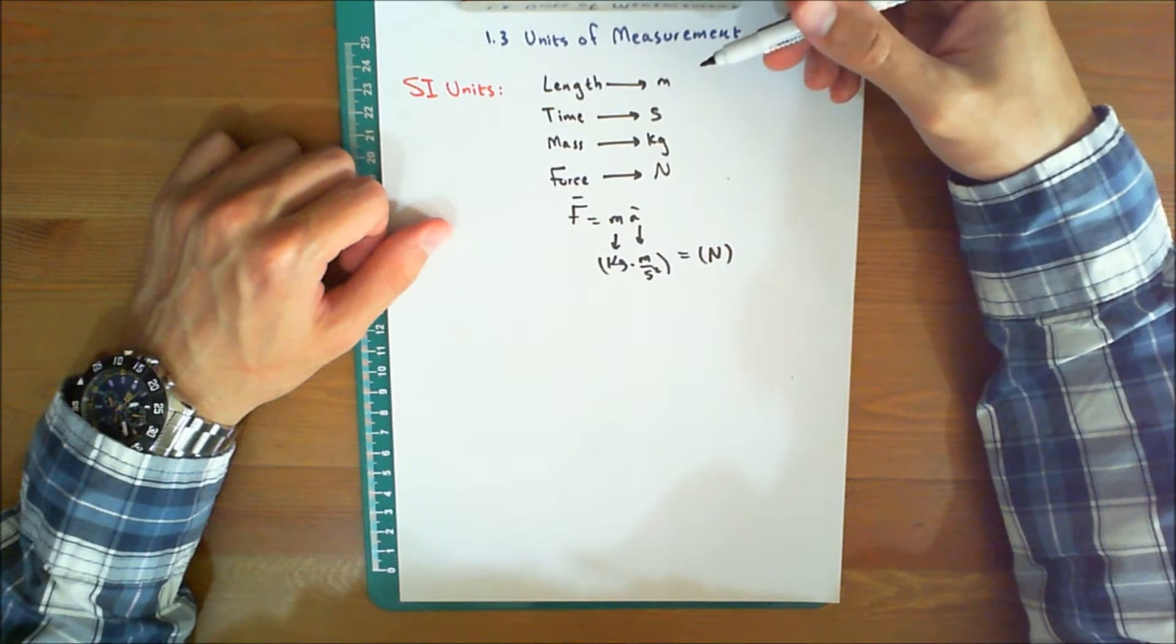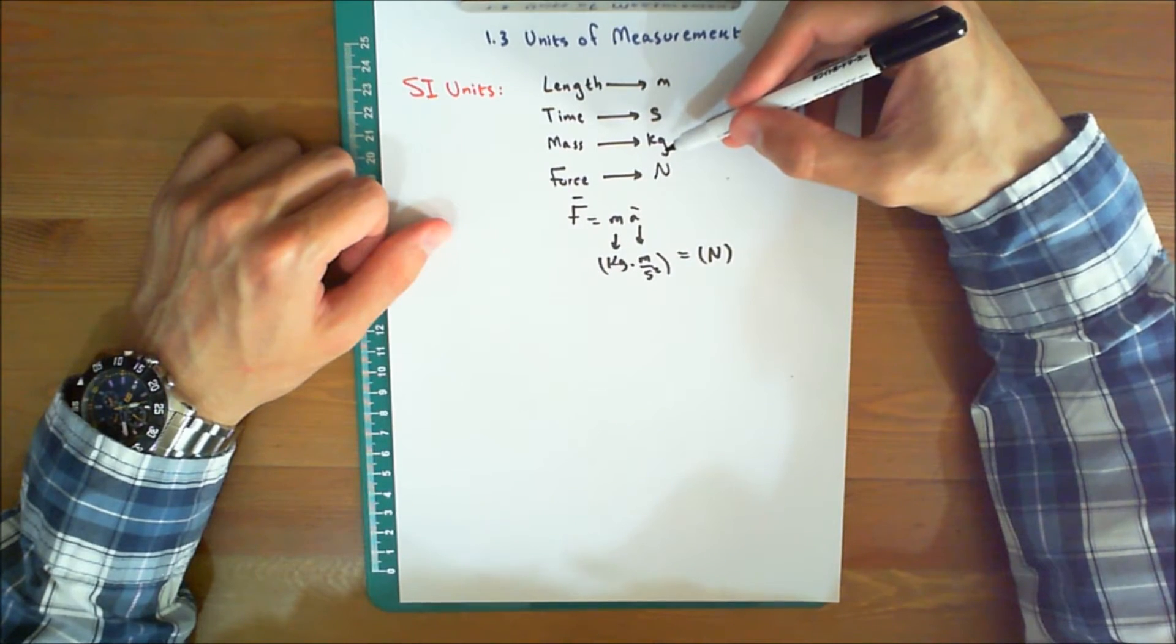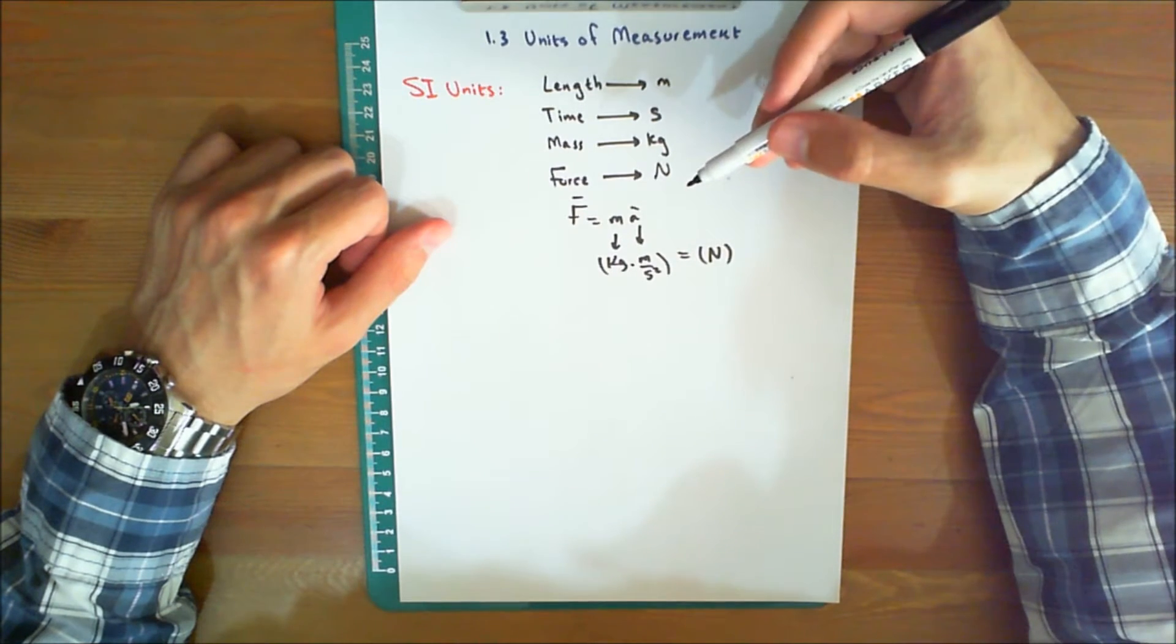The SI system specifies length in meters, time in seconds, and mass in kilograms. The unit of force, called a newton,